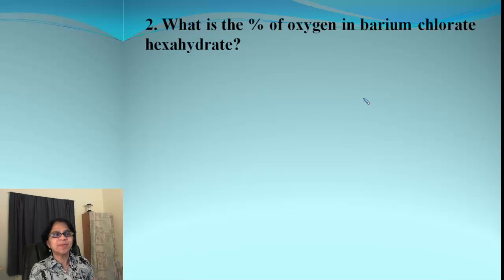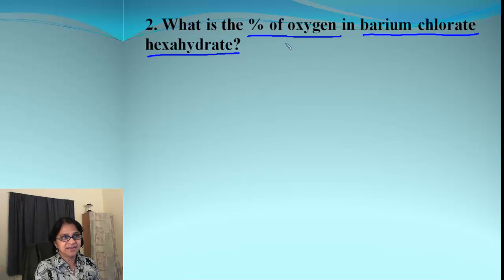All right. So this is another problem in which we need to find out percent for only oxygen and the compound is barium chlorate hexahydrate. So here's the formula for barium chlorate, Ba(ClO3)2 and we need two of those and 6H2O.